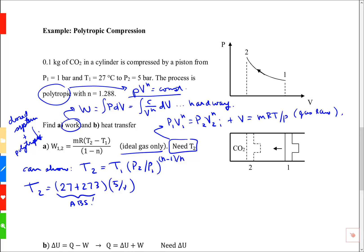My pressure ratio is 5 bar divided by 1 bar, and my power is going to be 1.288 minus 1 divided by 1.288. And if I crunch all of that, I get my final temperature to be 429.9 Kelvin.